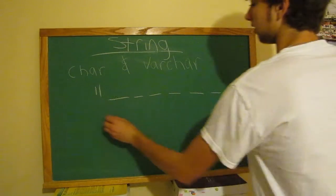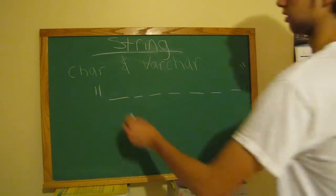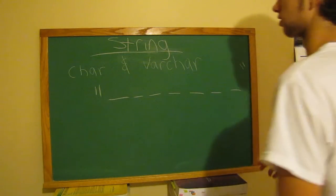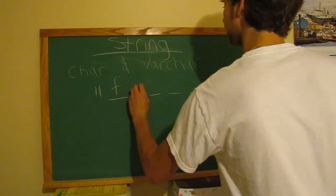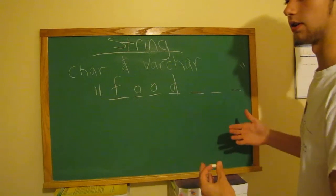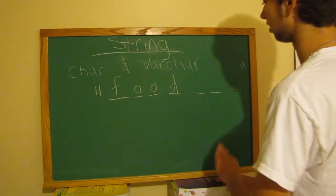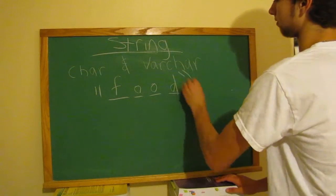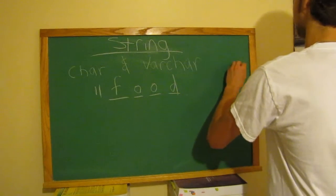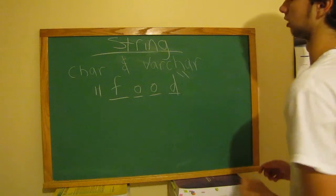When we use the char data type and enter a 4-letter word such as 'food', the remaining spots will be entered as spaces. When you retrieve it, the spaces are stripped off and it's given back to you as 'food'. Varchar, on the other hand, will cut the storage short and store it as 4 letters rather than 7.